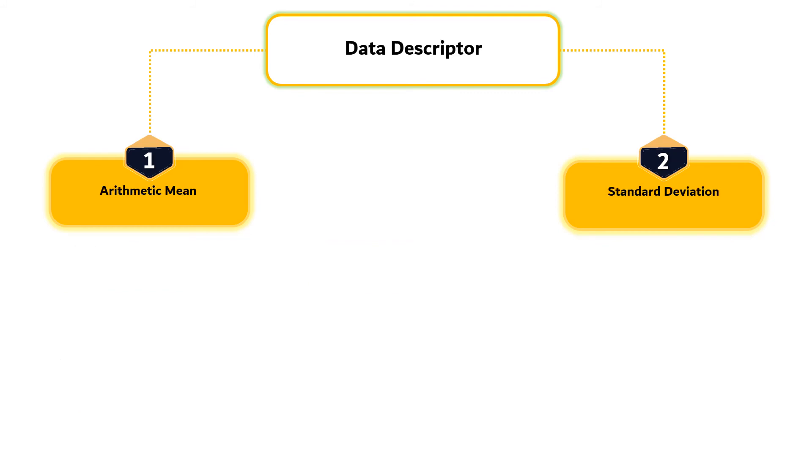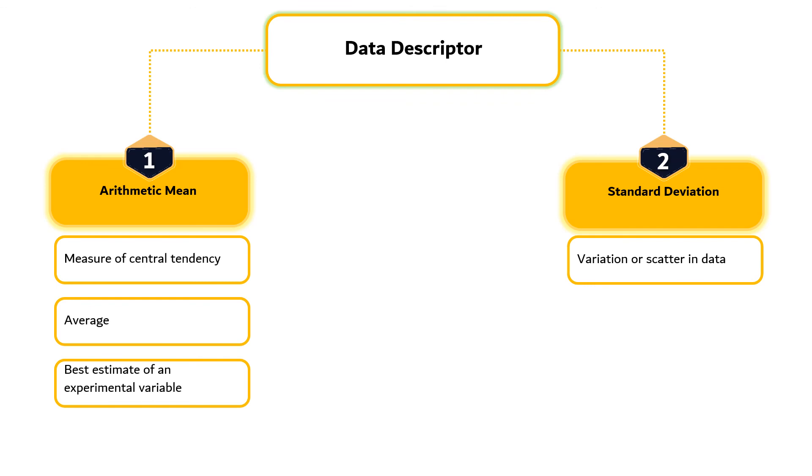Measurements containing random errors but not systematic errors can be analyzed using statistical procedures. Two customary descriptors of experimental data are arithmetic mean and standard deviation. The arithmetic mean is a measure of the central tendency of the data set and is often called the average. The standard deviation is a measure of the variation or scatter in data. The mean is often given as the best estimate of an experimental variable and standard deviation as an indication of the variability of the results.